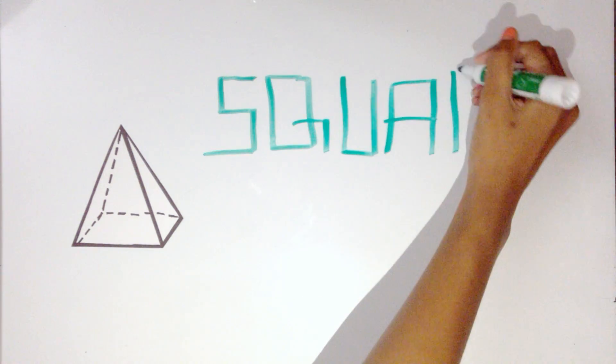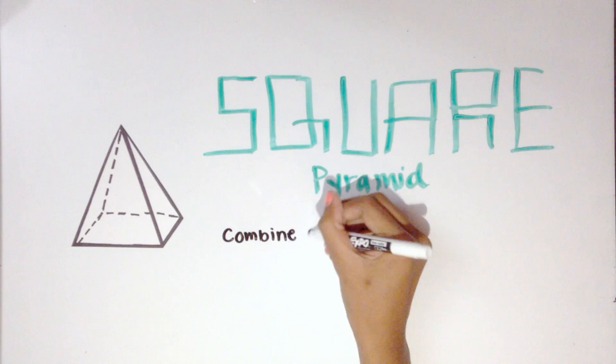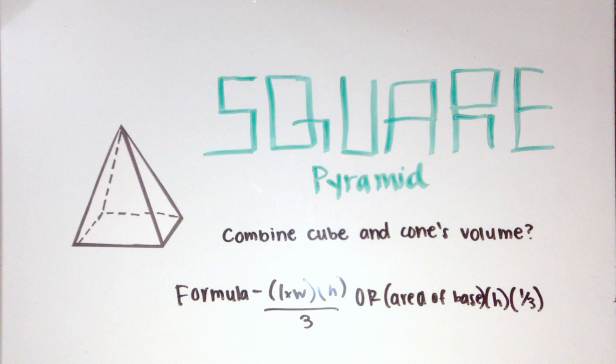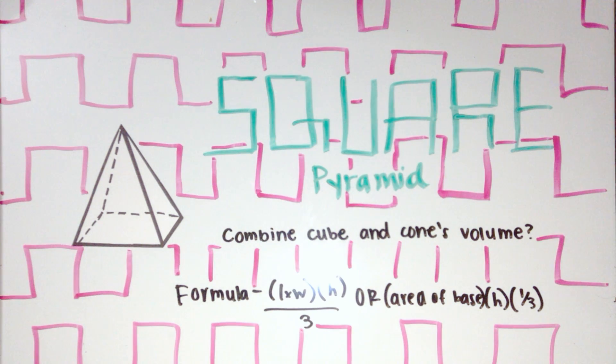combine a cone and cube's volume formulas? You get the equation for a square pyramid. Pretend three pyramids can fit in one rectangular prism, so you get the equation: length times width times height divided by three.